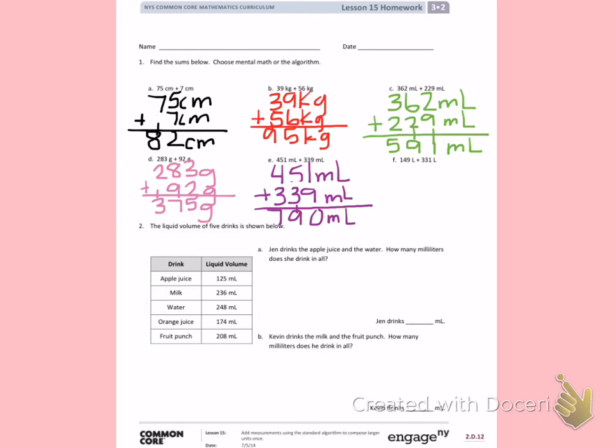Letter F. 149 liters plus 331 liters. Again, making sure to line up my numbers into the correct columns while I'm doing the standard algorithm. 9 plus 1 is 10. 4 plus 3 is 7, plus 1 more is 8. 1 plus 3 is 4. So I have a total of 480 liters.